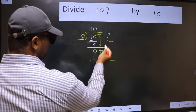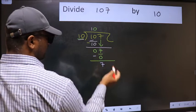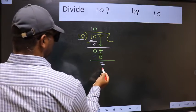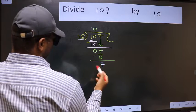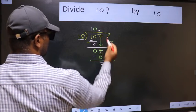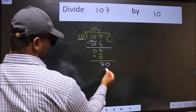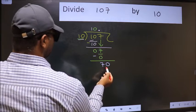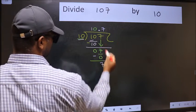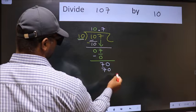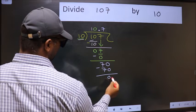Over here, we did not bring any number down, and 7 is smaller than 10. So now we can put dot and take 0, so 70. When do we get 70 in 10 table? 10 times 7 is 70. Now we should subtract. We get 0.